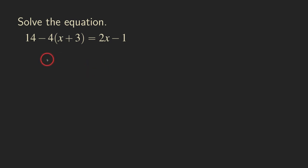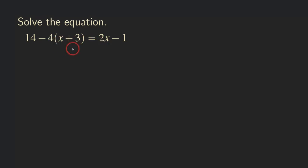Hello everyone, let's solve this linear equation. We have this linear equation with some parentheses. And so for solving this equation, the first thing that we need to do is to remove the parentheses. And to do that, we are going to distribute this negative 4 to the x and then also to the 3. So let's get started.